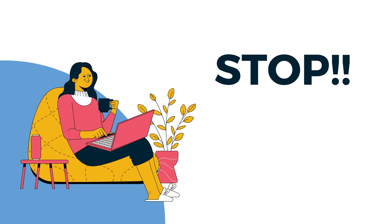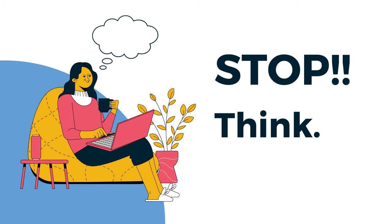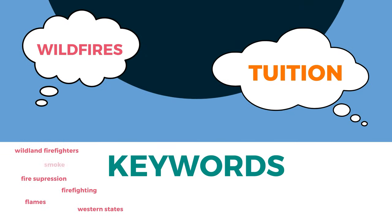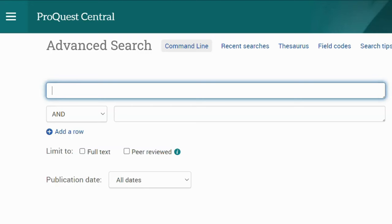Before searching for information in a database, think about your research topic. Do a few words or phrases come to mind? The terms you've just thought of are called keywords. Keywords are great to use at the beginning of the research process because they help you get more familiar with your topic.